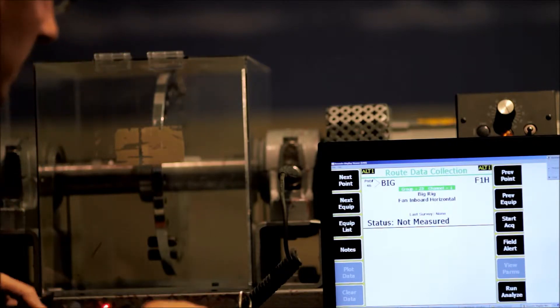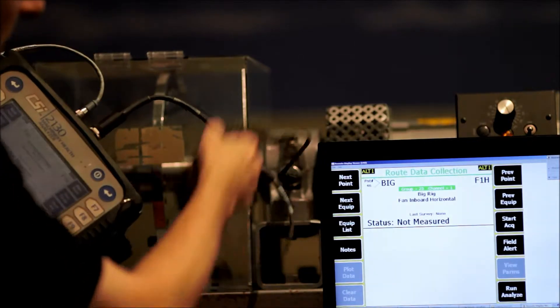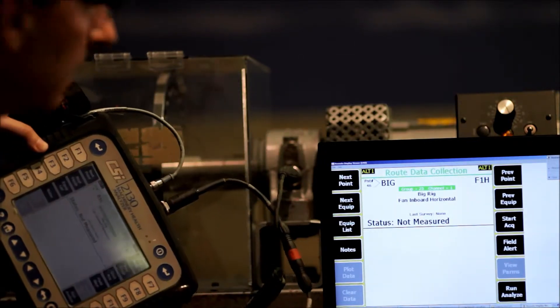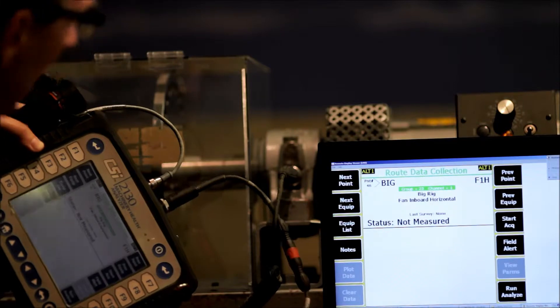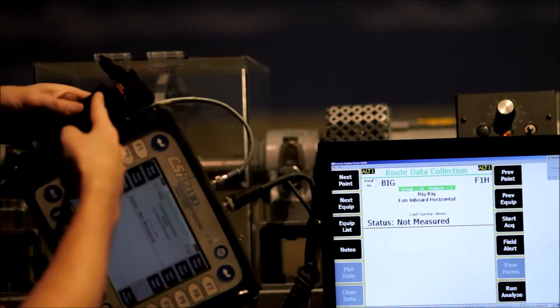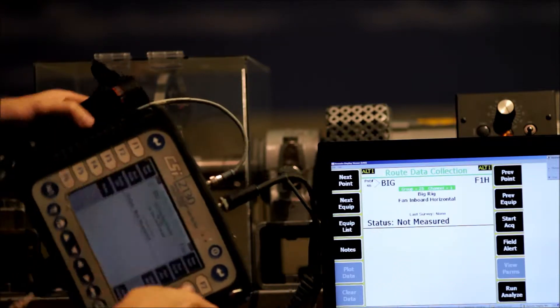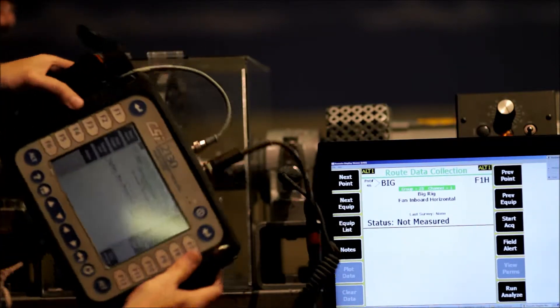So what I've got here, I've got a 2130. I've attached an accelerometer to the F1 bearing of this rig here that we call the big rig, and I also have attached to the analyzer a CSI4030 laser speed tack, which is attached to the handle of the analyzer here as we can see.